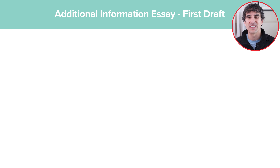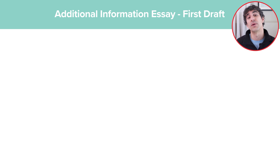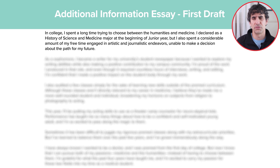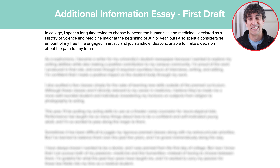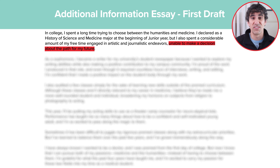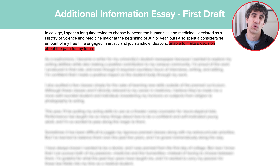Now that we've covered the various types of additional information essay prompts, let's take a look at an example of a scattered and unfocused first draft essay in response to the Boston University prompt. 'In college, I spent a long time trying to choose between the humanities and medicine. I declared as a history of science and medicine major at the beginning of junior year, but I also spent a considerable amount of my free time engaged in artistic and journalistic endeavors, unable to make a decision about the path for my future.' The first error is the language the applicant uses to describe their struggle — stating they were unable to make a decision risks giving adcoms the impression they aren't fully committed to medicine.